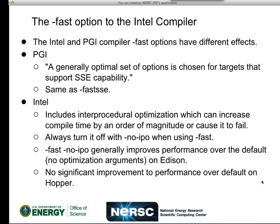The -fast option is very different between the two compilers. In PGI, -fast is, to quote the man page, 'a generally optimal set of options chosen for targets that support SSE capability.' It doesn't do a lot of very big analysis. For Intel, -fast includes a lot of optimizations, but most significantly it includes inter-procedural optimization, which can increase compile time by an order of magnitude or cause it to fail. For GTC, if you compile it with -fast, it will literally take an order of magnitude longer than with default optimization or with -fast -no-ipo.